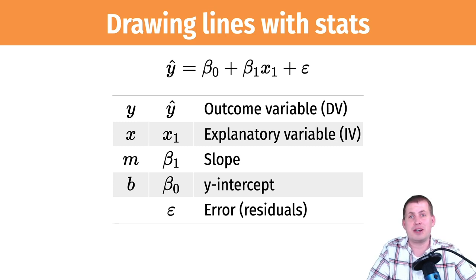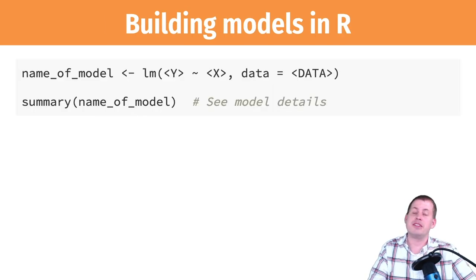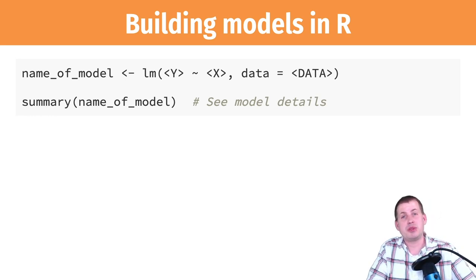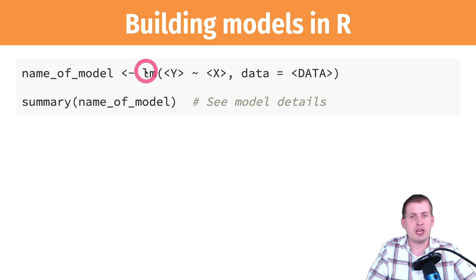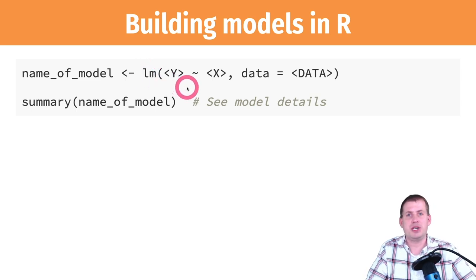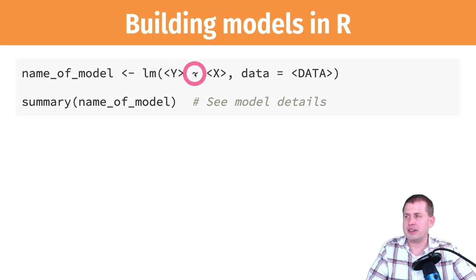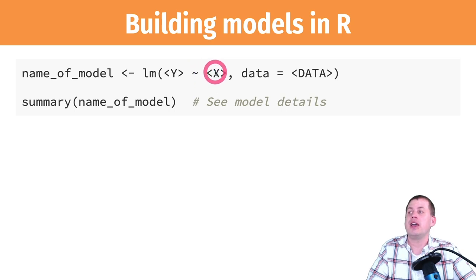The way you run models in R — this isn't the focus of the class, the focus is using ggplot, but today we're using ggplot to plot models, so you need a brief introduction. The function you use for a standard linear model is lm(), which stands for linear model. The syntax uses the tilde sign (~), which is R's way of writing a formula.